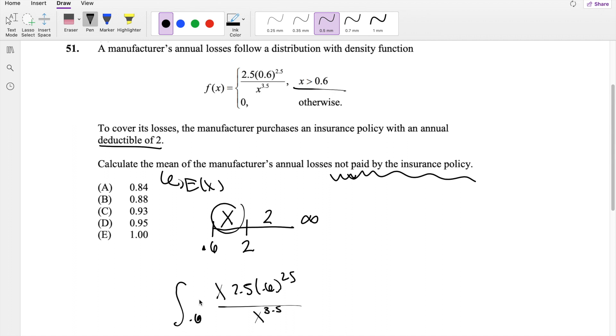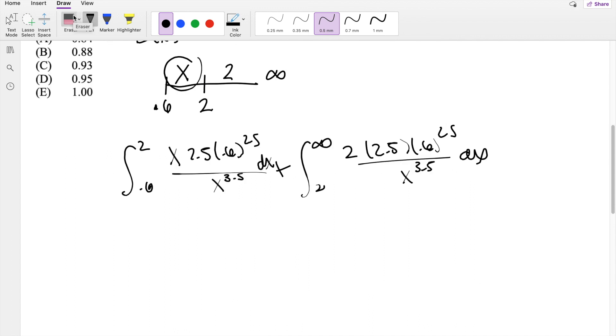And then from going from 2 to infinity, the value is just going to be 2 no matter what, times the pdf function here. It's going to be 2.5 times 0.6 to the 2.5, divided by x to the 3.5, dx dx. So you notice all the terms have 2.5, 0.6 to the 2.5, so I'm actually going to factor that out, 2.5 times 0.6 to the 2.5.